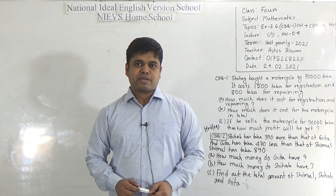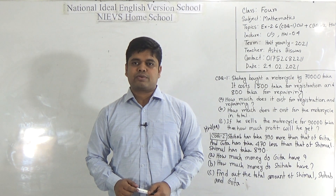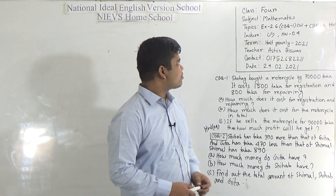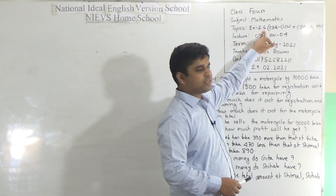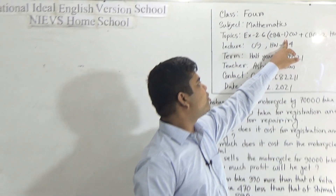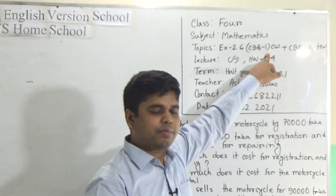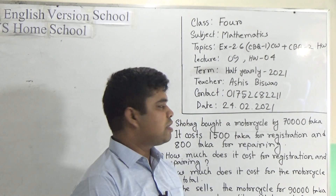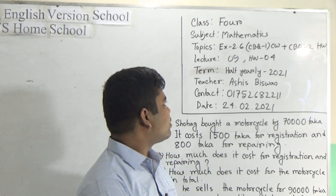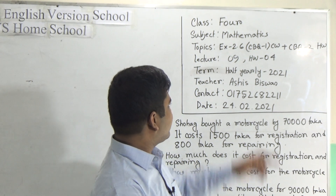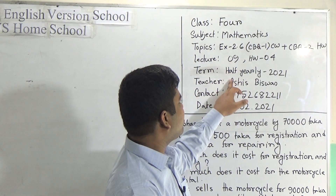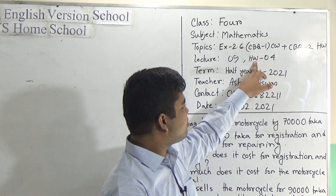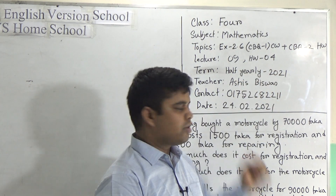Today I am going to take a math class for the students of class 4. Our today's topic is exercise 2.6. CBQ1 will be solved in our class as CW, and CBQ2 will be your SW. Today is our lesson number 9 of half yearly 2021, and today's SW number will be 4.